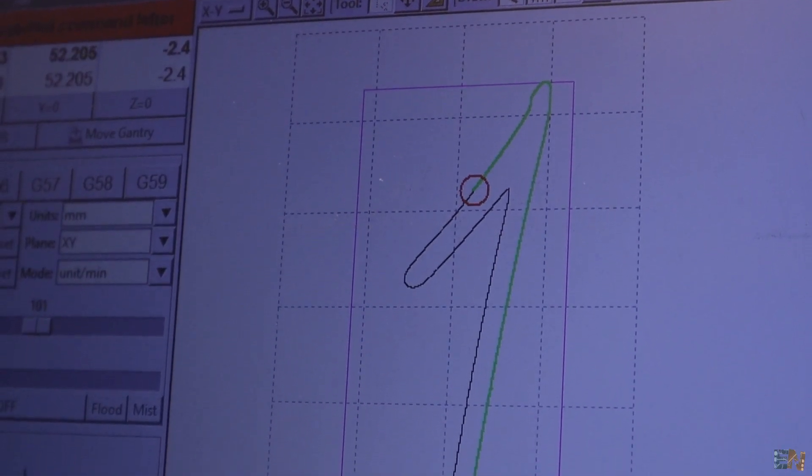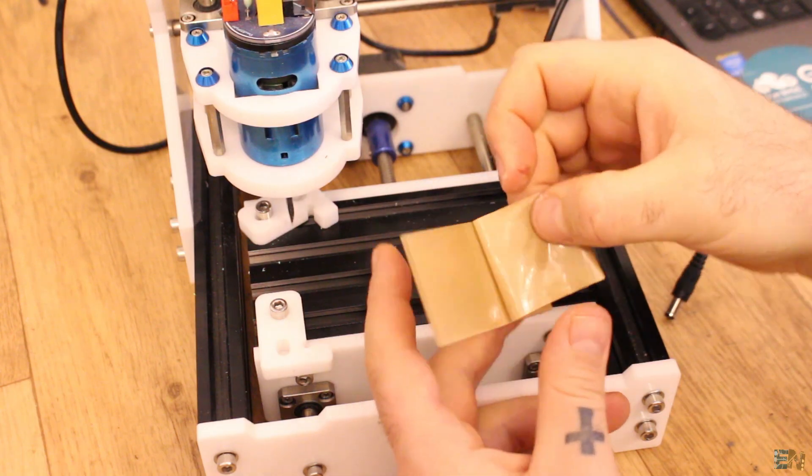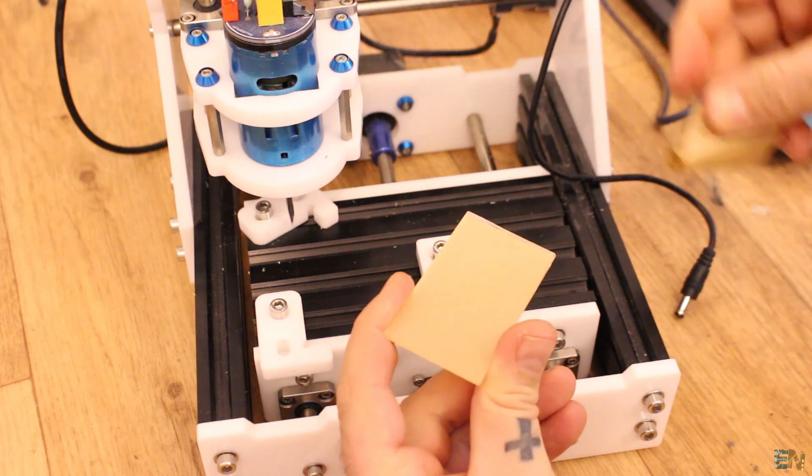So let's start with number 1 for example. As you can see, here we have the G-code and we can see where the drill will move.